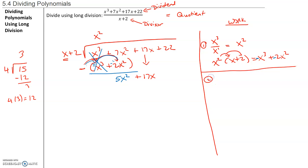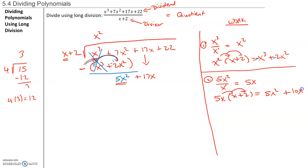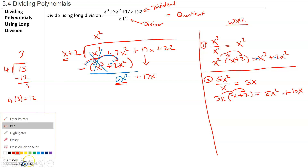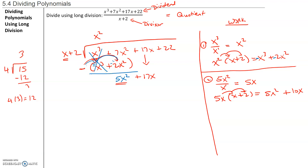We're going to repeat this process again, focusing on the first term of the dividend and the first term of the divisor. We take 5x squared and divide that by x. The 5 remains intact, x squared divided by x — we have 2 x's, take away 1 — that gives you 5x. But we're going to take that 5x and multiply it by x plus 2. That gives us 5x squared and 10x. Since I know I have to subtract it, I'll change both signs: negative 5x squared and negative 10x.